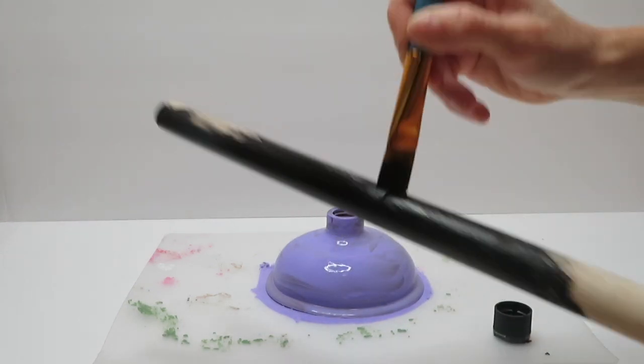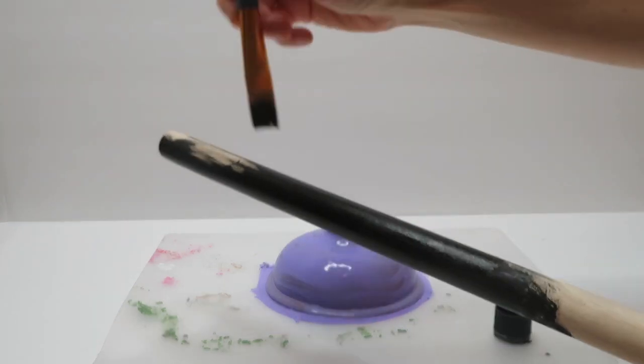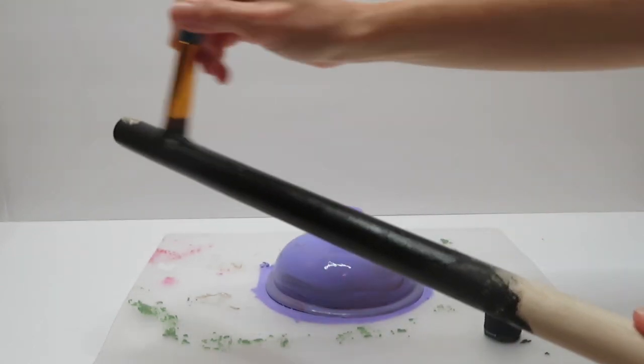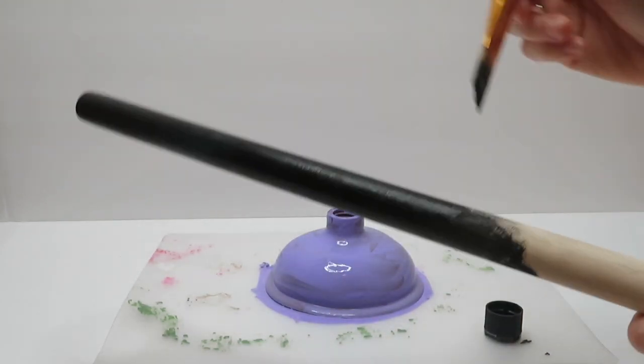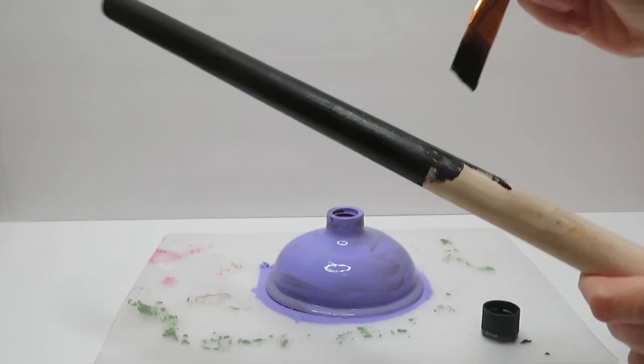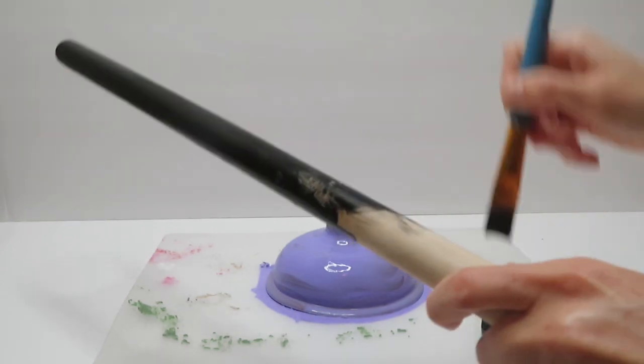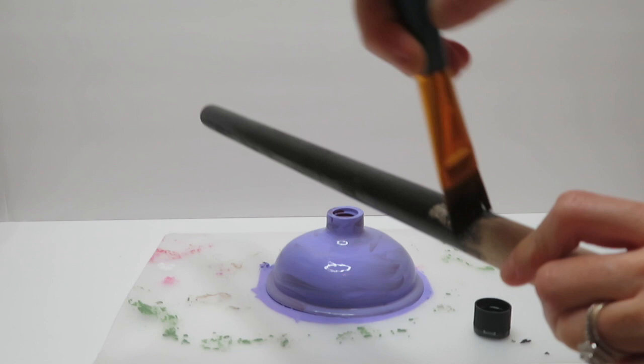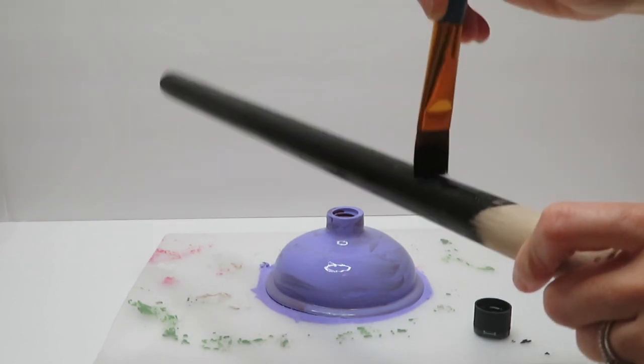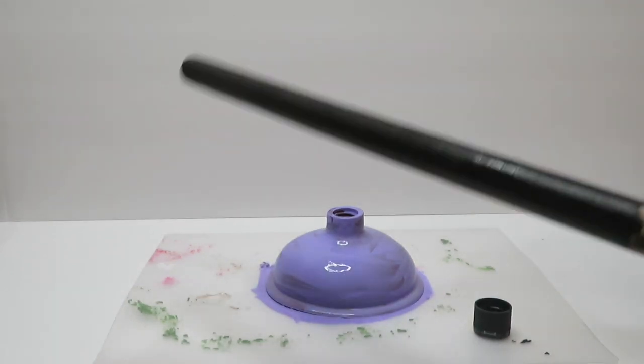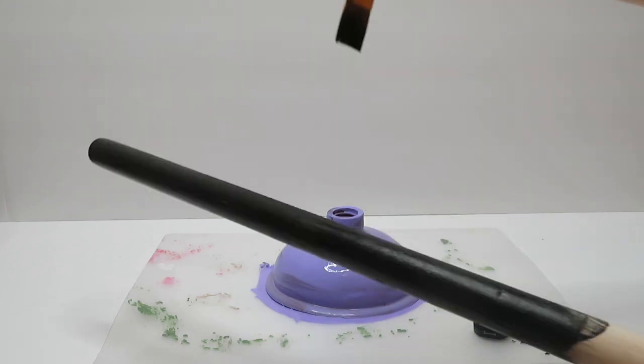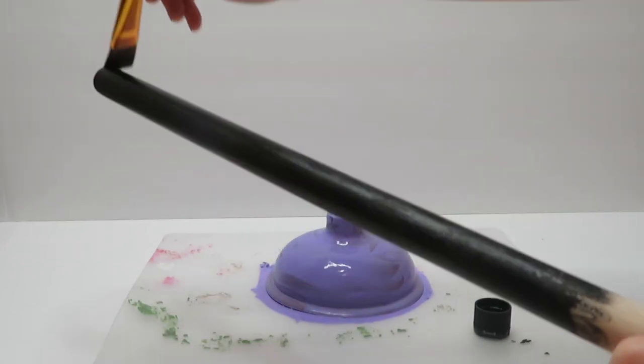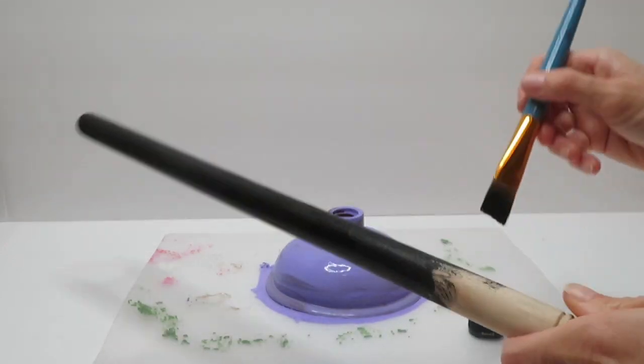You can see in the background I did paint the rubber part of the plunger because I was thinking I might keep it on there. In the end you'll notice that I totally get rid of that rubber part of the plunger, so there's really no need for you to paint that.